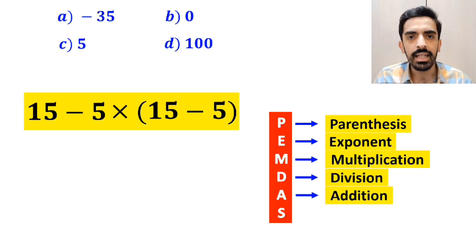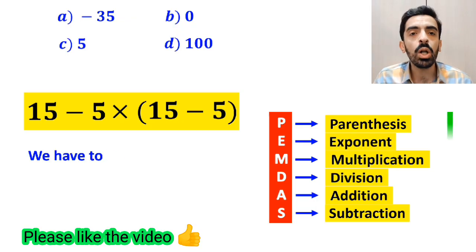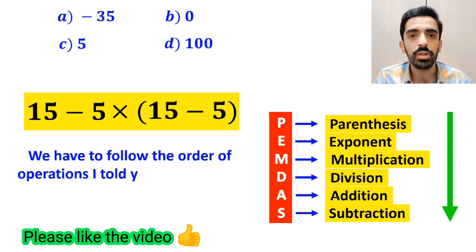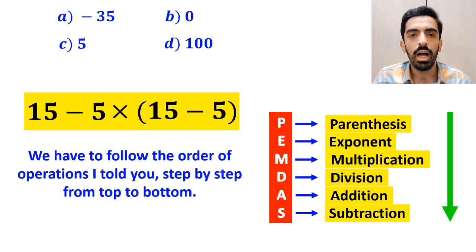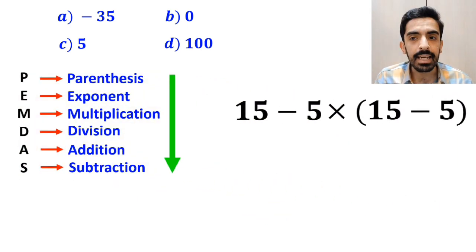We have to follow the order of operations I told you step by step from top to bottom. All right, as you can see in the image, in this expression first we have a subtraction sign, then a multiplication sign, and finally parenthesis.